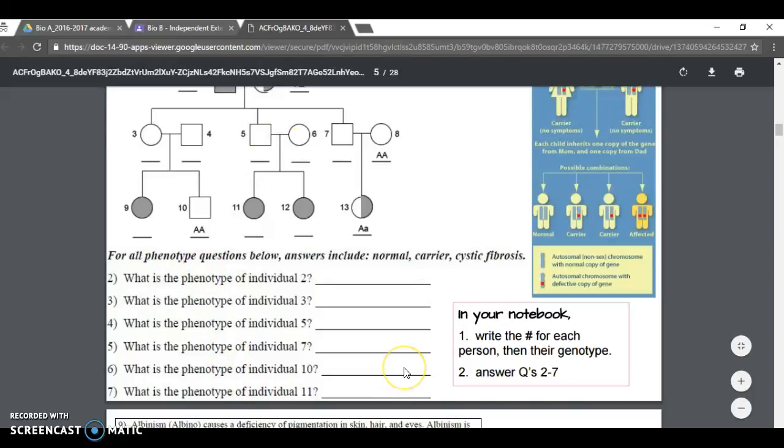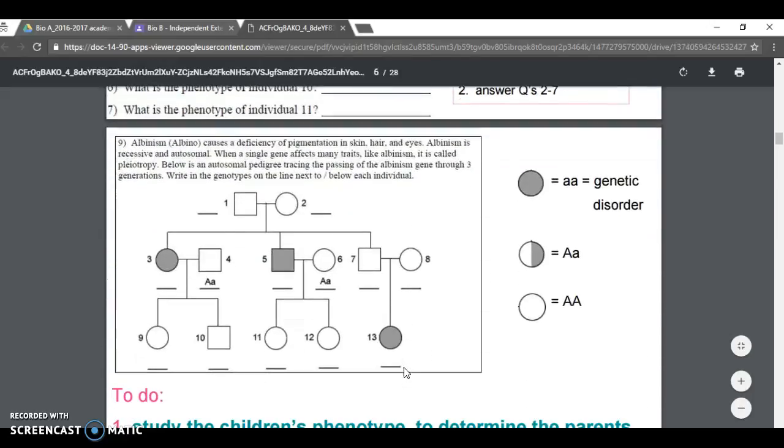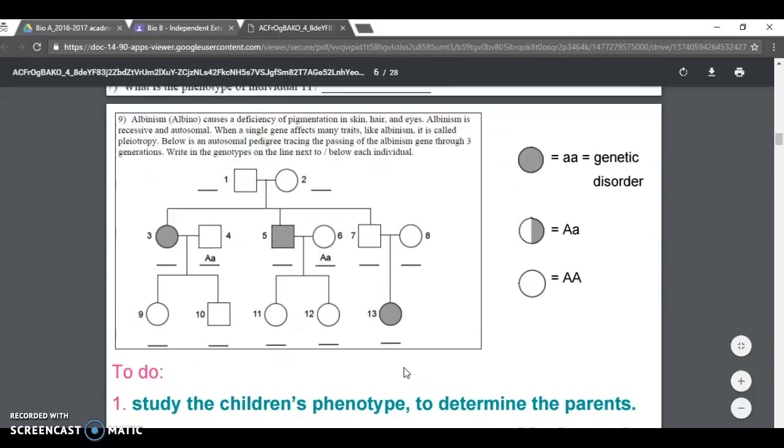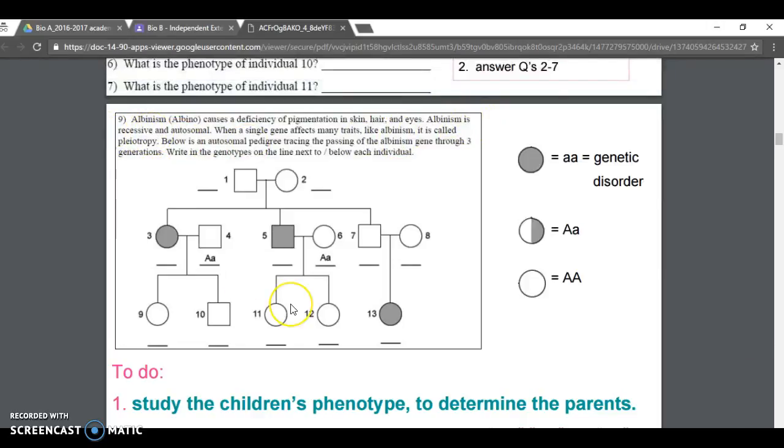On that same worksheet, you have to say what's the phenotype of all these individuals. We figured it out already for person number three. Individual number three, which is a mom, she was a carrier. So you'd write carrier. Just like it says in your notebook, write the alleles for each person and answer questions two through seven.